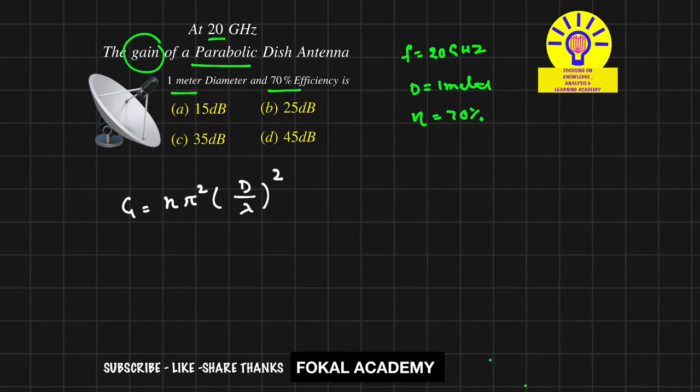So here lambda is nothing but the wavelength. We know the frequency, so from that you can get the wavelength. That is, we know that C equal to nu lambda, so lambda equal to C by nu.